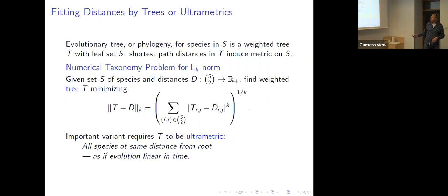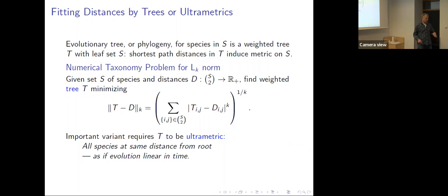Sometimes we're very interested in the case where the tree is an ultrametric, which corresponds to saying all species are the same distance from the root. Another way to say it — as mathematicians normally do — is that the distance from x to y is the max of the distance from x to z and the distance from z to y. So not just the usual triangle inequality, but an equality to the max.